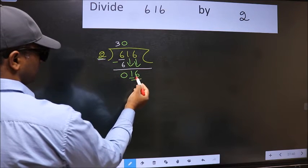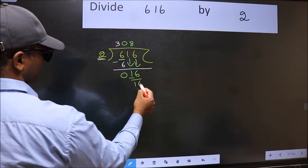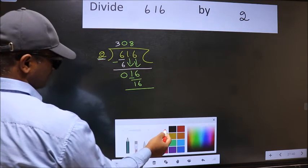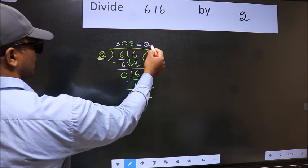Now 16. When do we get 16 in 2 table? 2 times 8 is 16. Now we should subtract. We get 0. So this is our quotient.